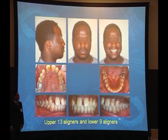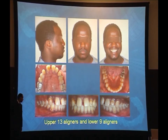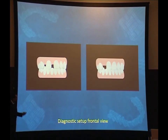We'll start with this Class 1 patient who has congenitally missing upper right lateral, spacing in the upper arch, proclined upper incisors, shift in the midline, and high frenum attachment. The treatment plan, as we will see in this diagnostic setup, will be to close the median diastema, create more space for the congenitally missing lateral, slight retrusion of the upper and lower incisors, and correction of the midline.